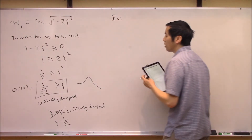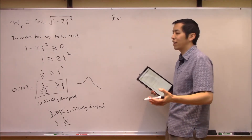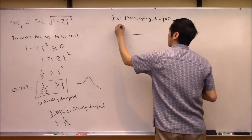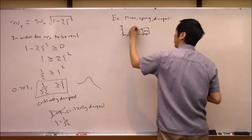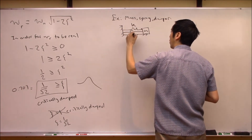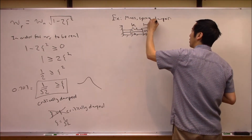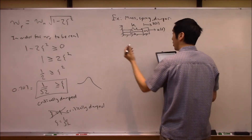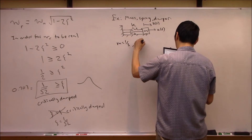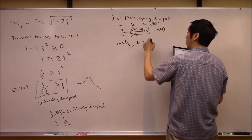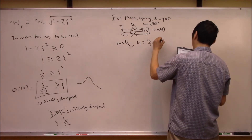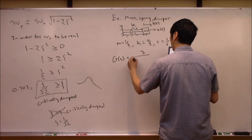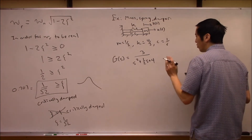Let's look at the same example we've used for the last two videos: a mass-spring-damper system. A mass hooked up to a spring and a damper with a force applied. We used a mass of 1/3, spring constant of 4/3, and damping coefficient of 1/6. The resulting transfer function is G(s) = 3 / (s² + ½s + 4).